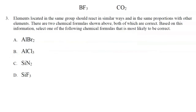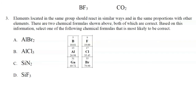In number three, we're given two correct chemical formulas: BF₃ and CO₂. We have to select which of the following formulas is most likely correct, based on the idea that elements in the same group react in similar ways and in the same proportions. Starting with BF₃: underneath boron are aluminum and gallium; underneath fluorine are chlorine and bromine. We can replace boron with aluminum or gallium and keep that same 1-to-3 ratio, or replace fluorine with chlorine or bromine and keep that same 1-to-3 ratio.